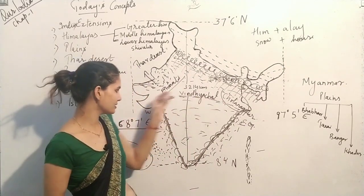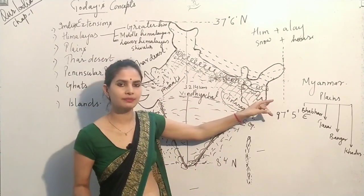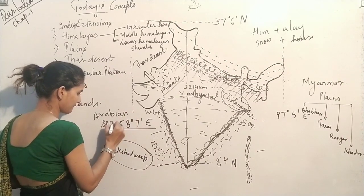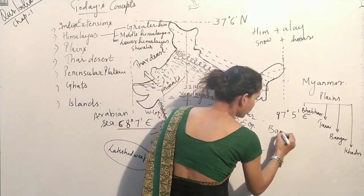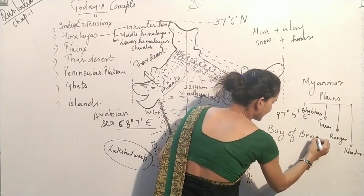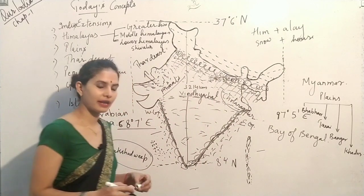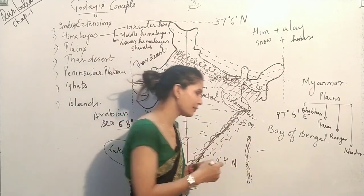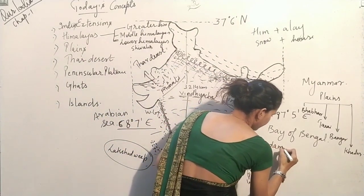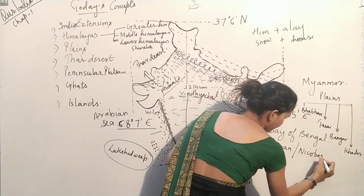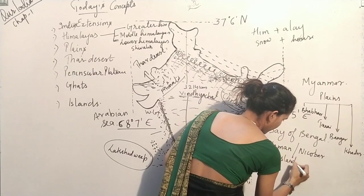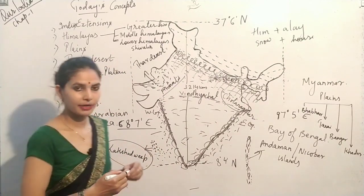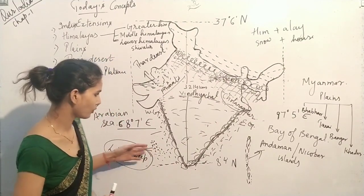At both ends we have two seas. The Arabian Sea is on the west side and the Bay of Bengal is on the east side. Both these seas have many groups of islands. In the Arabian Sea we have the Lakshadweep islands, and in the Bay of Bengal we have the Andaman and Nicobar Islands. Both these island groups are made up of many small islands.